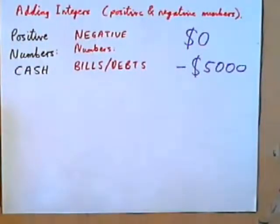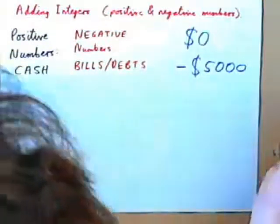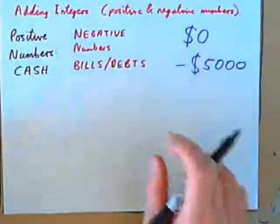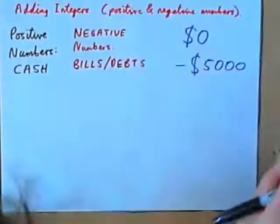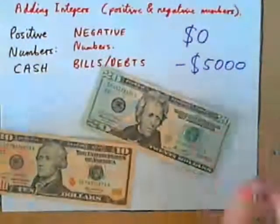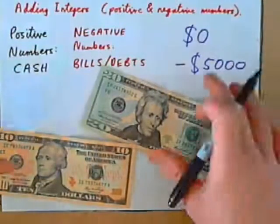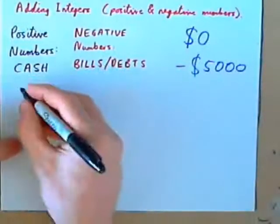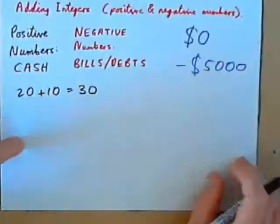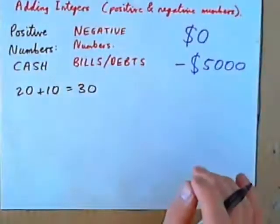And that's where they're used a lot in the world. So, let's have a look at positive numbers being cash, negative numbers being bills or debts. Obviously, adding positives is no big deal. If you had $20 and $10 positive, 20 plus 10 equals 30. So, two positives added make a positive, and you've known that for a long time.